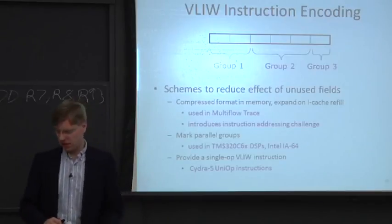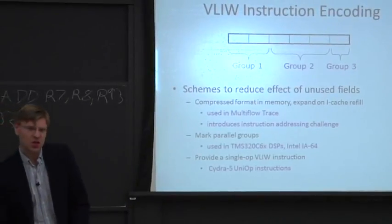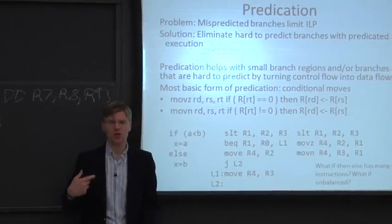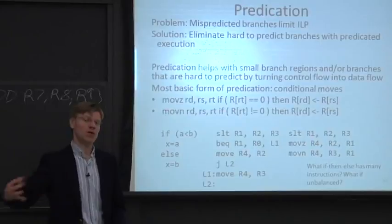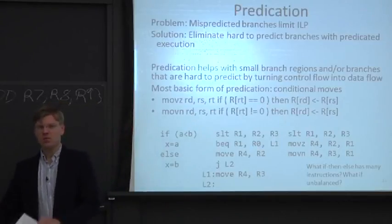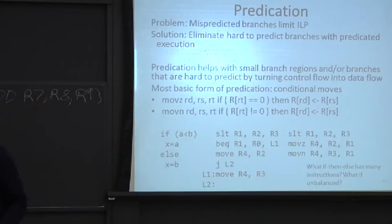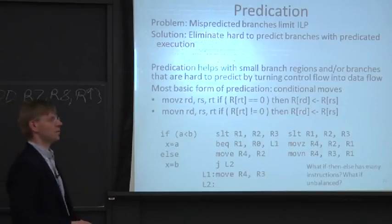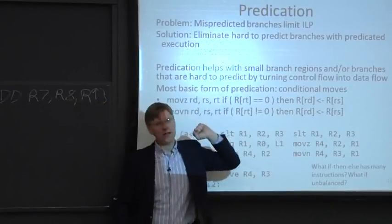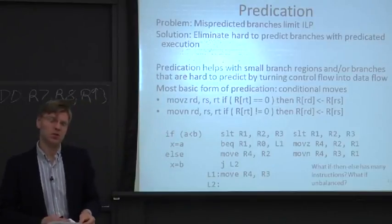Today we're going to talk about how to get all the performance that out-of-order superscalars can get, but in the context of VLIW. We'll build up all the techniques that out-of-order superscalars use to achieve instruction-level parallelism, then apply them inside VLIW. One key problem is branches: if they mispredict, this can limit your ILP in a VLIW.